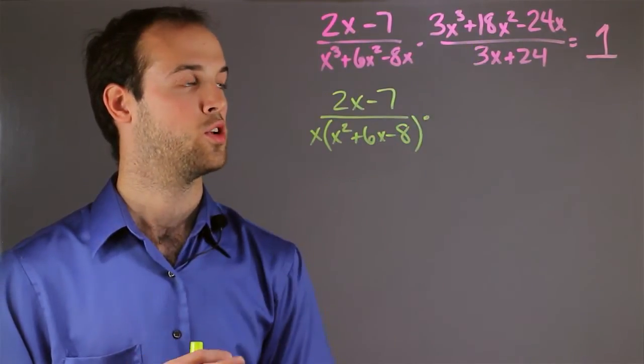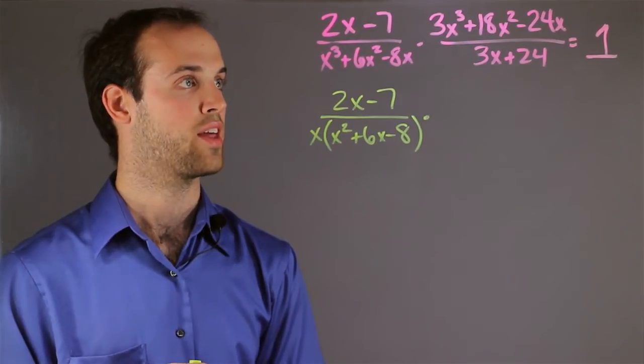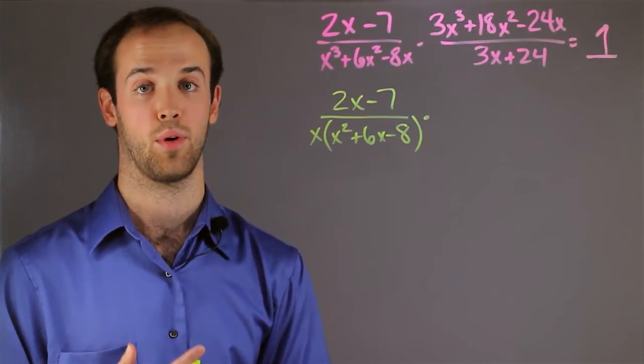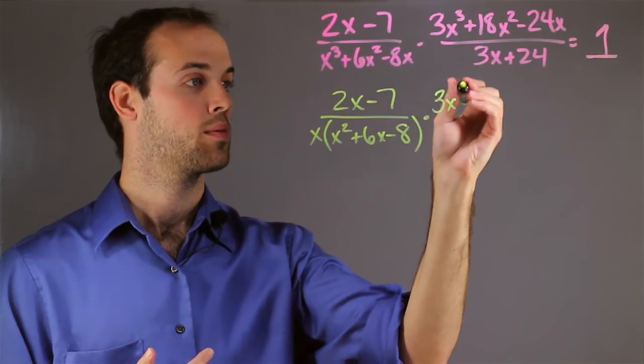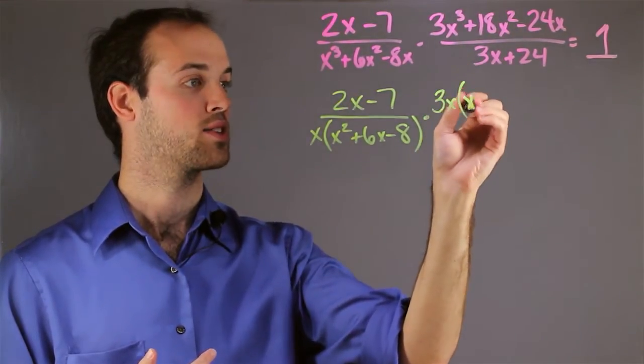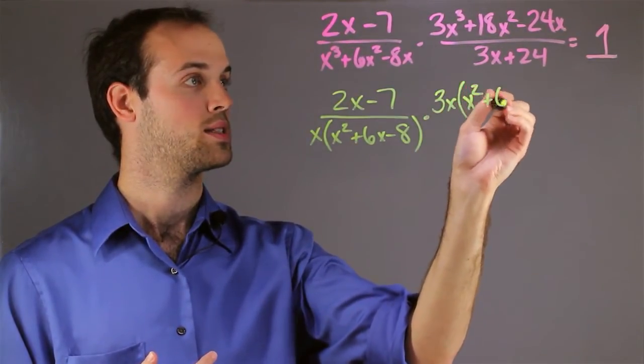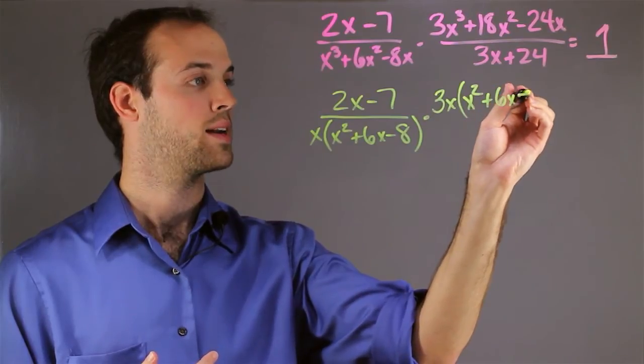Now up here on this numerator I see that I have a 3x in common, so I can go ahead and pull those out. And left on the inside I have x squared plus 6x minus 8.